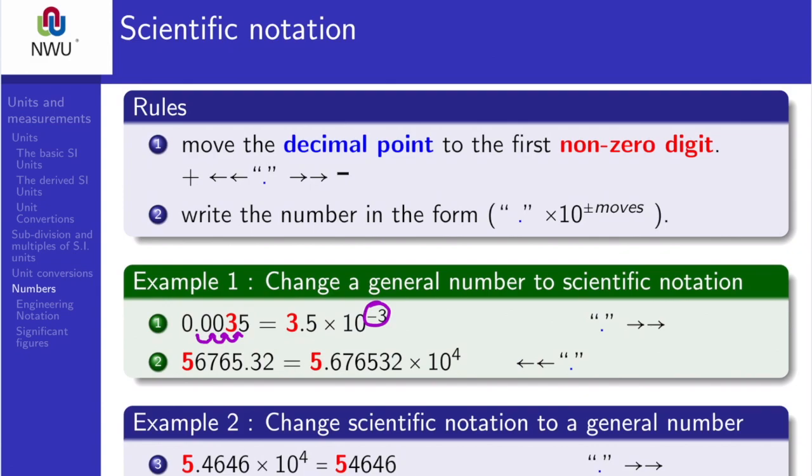In 1.2, 56765.32, we've got to move the decimal to the first non-zero digit which is 5 and we take 4 leaps or 4 steps as shown. And since we are moving to the left, the power of 10 becomes positive.